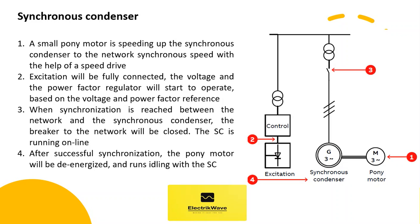Item number 2 is the excitation system — reference input is provided through a voltage transformer. Item number 3 is the generator circuit breaker. Item number 4 is the synchronous condenser.